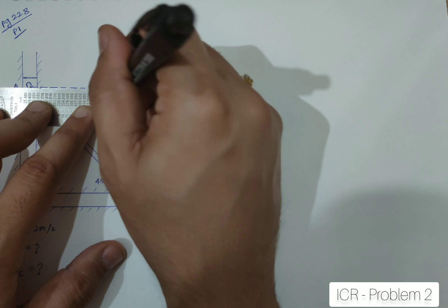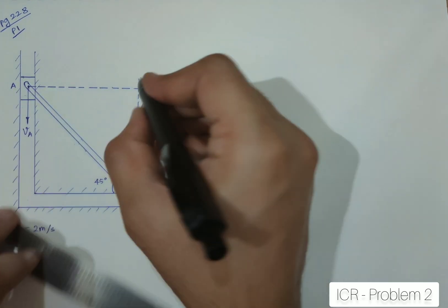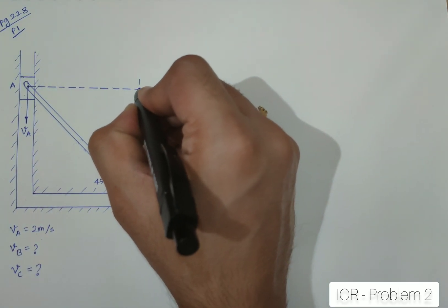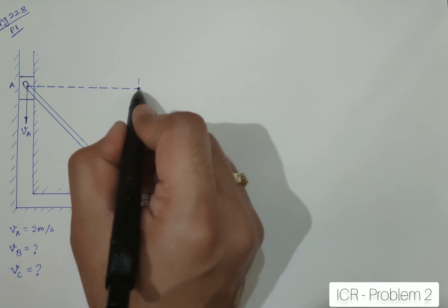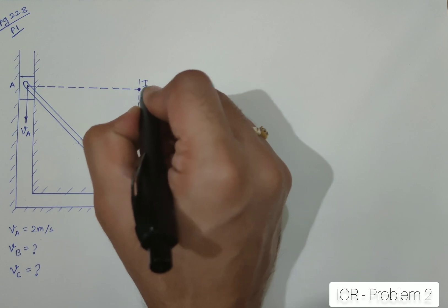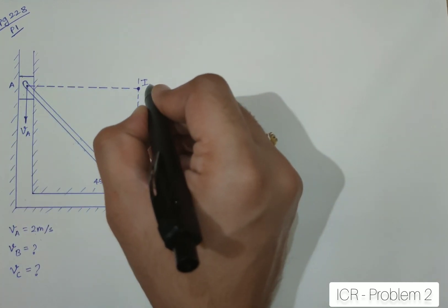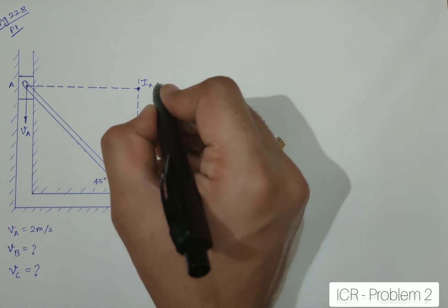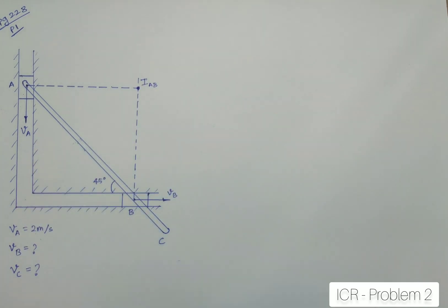Now, why is that happening? It is just because, even with the formula, if you see, V is equal to R omega, there is no R from the center of rotation. So, definitely, velocity has to be zero. So, this becomes my ICR for the entire link AB, in fact, AC.